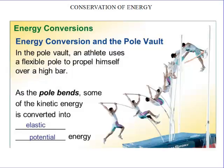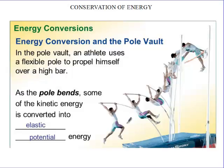As he is jumping, the pole bends, and eventually the pole straightens and propels him over the high bar. This is an example of conservation of energy — he did not create any new form of energy. Instead, he used the chemical potential energy inside him and changed that to kinetic energy when he started moving.